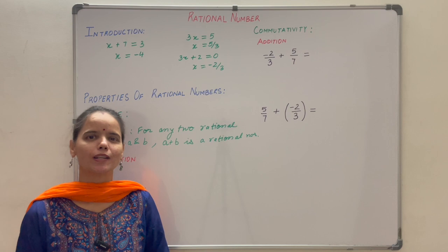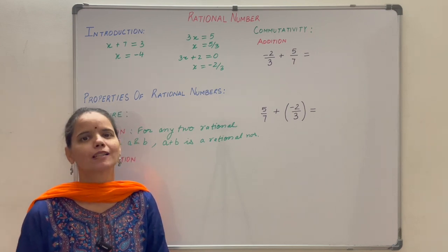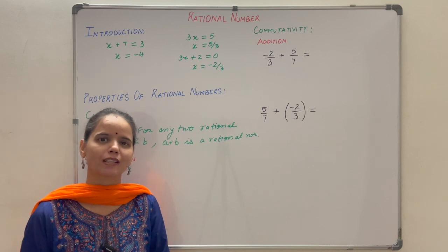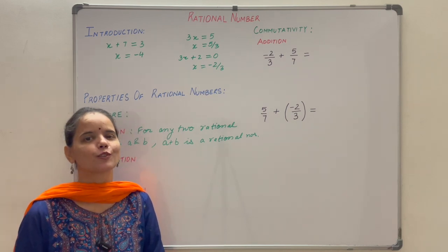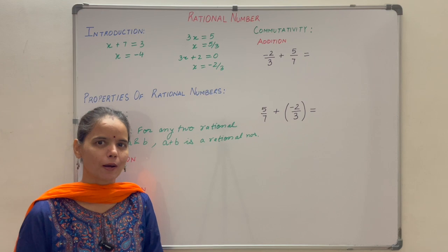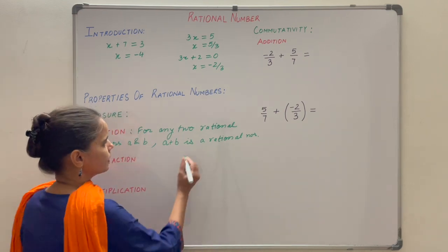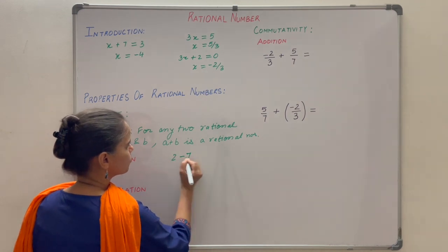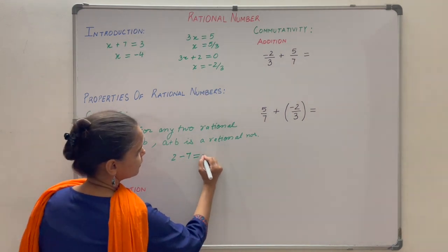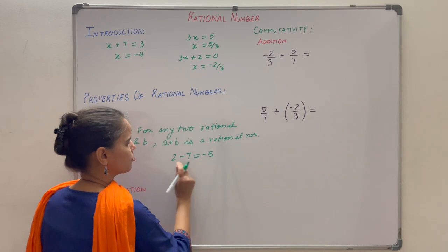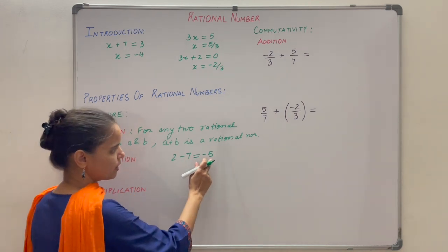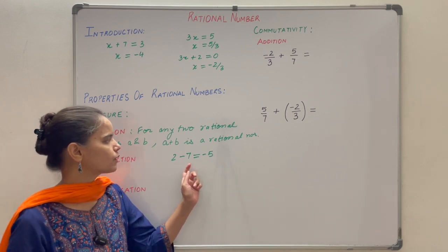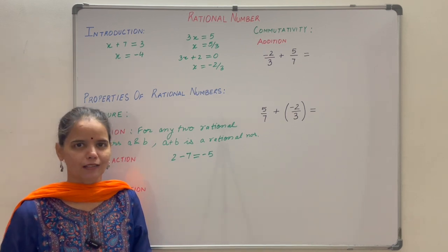Subtraction. You know that whole numbers are not closed under subtraction — whenever you subtract two whole numbers you will not always get a whole number. For example, subtracting 7 from 2 gives minus 5. You subtracted two whole numbers and got an integer, not a whole number. So whole numbers are not closed under subtraction.